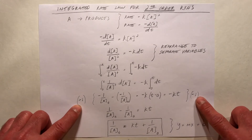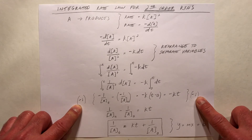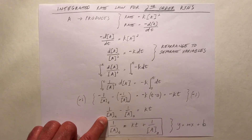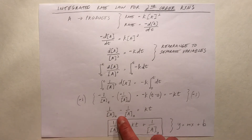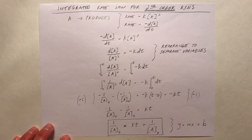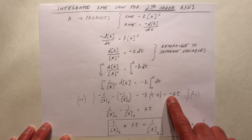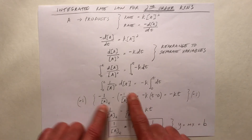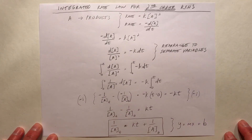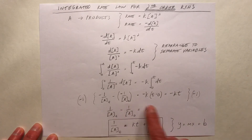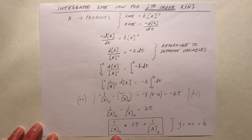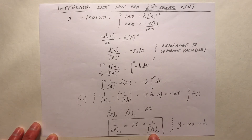We multiply both sides of the equation by negative 1. When we do that, we end up with the inverse of [A] at time T minus the inverse of [A] at time zero equal to KT. Rearranging this equation, you end up with 1 over [A] at time T is equal to KT plus 1 over [A] at time zero.